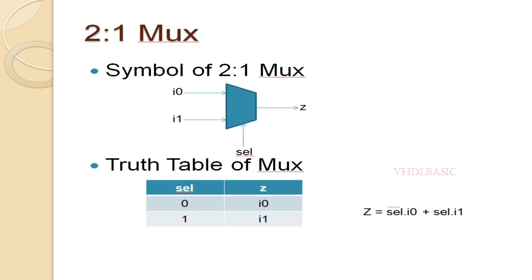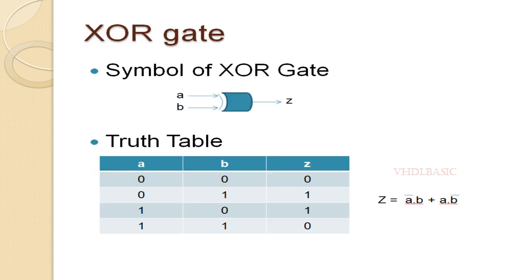This is the Boolean expression of the 2-to-1 MUX: Z equals select-bar dot I0 plus select dot I1. This is the XOR Gate simple diagram where A and B are the inputs and Z will be the output of the XOR Gate.